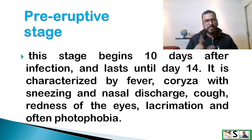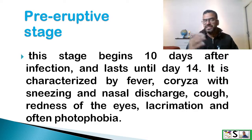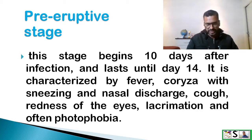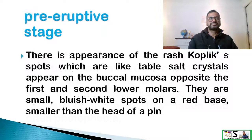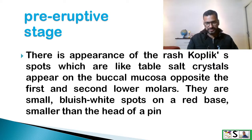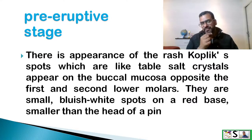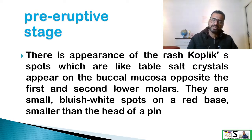The pre-eruptive stage means before eruption of rashes. This stage begins 10 days after infection and lasts until 14 days. It is characterized by fever, coryza, sneezing and nasal discharge, cough, redness in the eyes, lacrimation, and often photophobia. There is also appearance of a rash known as Koplik's spots on the buccal mucosa, which look like table salt crystals at the level of the first and second lower molars — small bluish-white spots on a red base, smaller than the head of a pin.